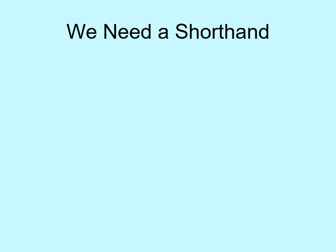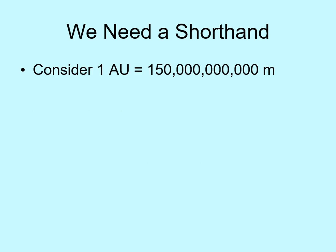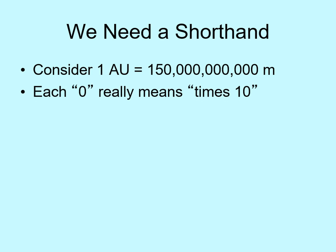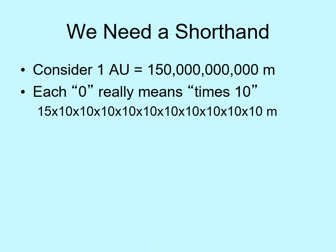Let's look at how we come up with a shorter way of writing something like this. We'll start with a smaller number, the astronomical unit, or 150 billion meters. Notice all of those zeros — those are really just placeholders, to tell you that it's not just 15 meters. Each zero is really a way of saying times 10. So if we wanted to, we could rewrite it as 15 times 10 times 10 times 10... 10 times.